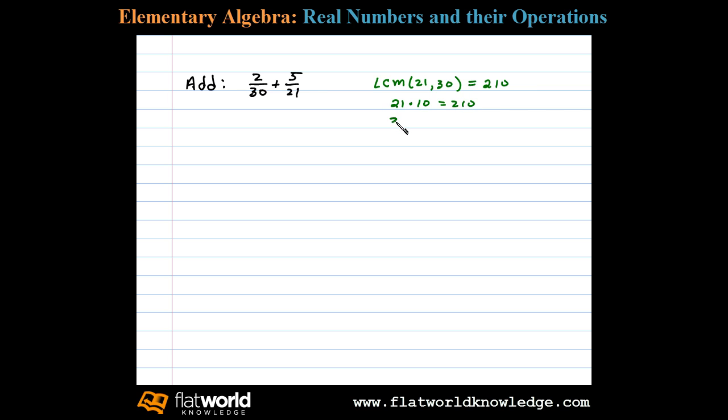210 and 30 times 7 equals 210. We're going to use 210 as the common denominator, so we need to find equivalent fractions with